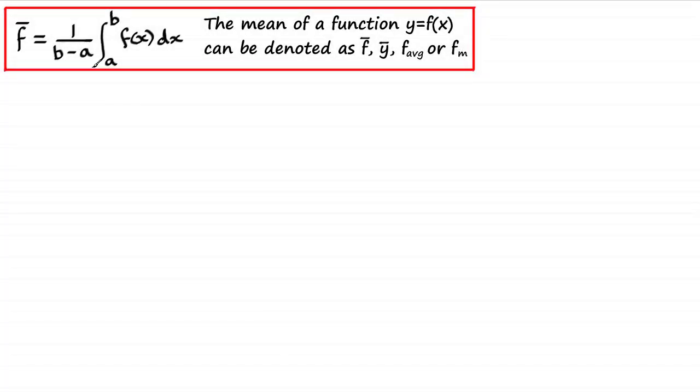So we've already seen that the mean given by f̄ is equal to 1/(b-a) times the integral from a to b of f(x) dx. I've used this notation f̄, but the mean of a function y = f(x) can be denoted not only by f̄ but by ȳ. Sometimes you'll see f_avg short for average, or even f with a little m here being the initial for the mean. So these are some of the alternative notations that you might see.